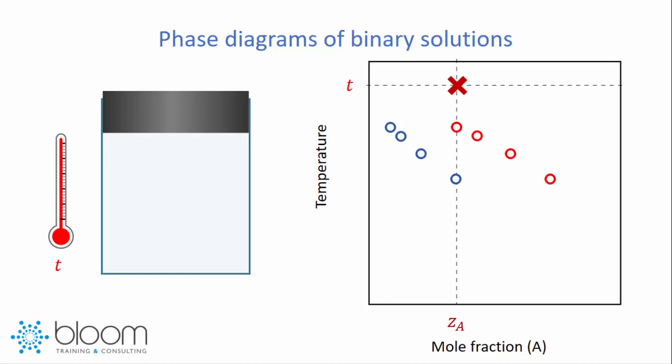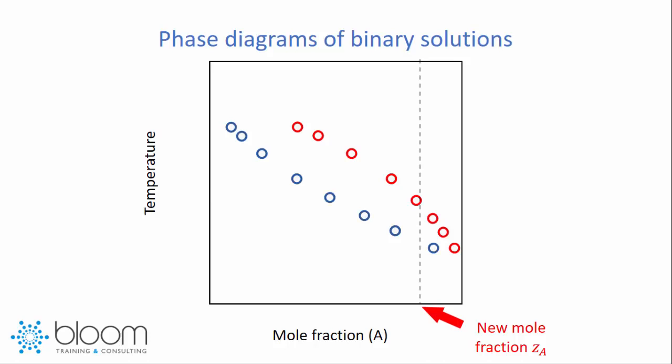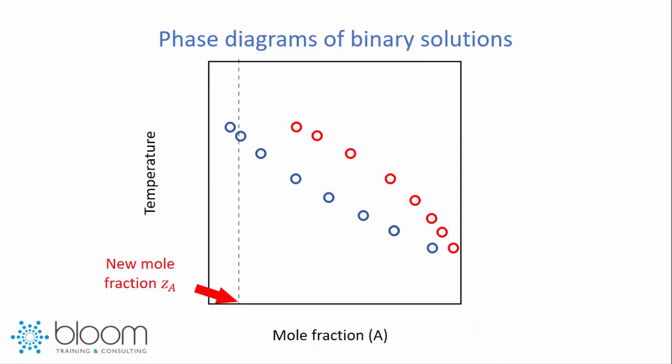Let us now move our graph here to the center. Now we might have the idea of running this experiment again, but now starting from a different mole fraction of A, ZA. If we do so starting from here, we are going to obtain a new set of points, shown here in the graph. And we might do it again, starting again from a new point, which would give us yet another set of points.